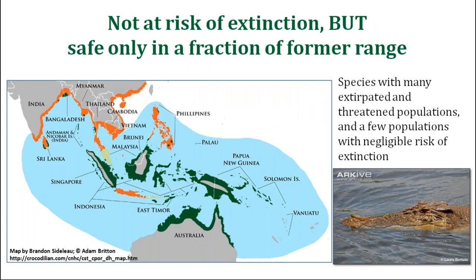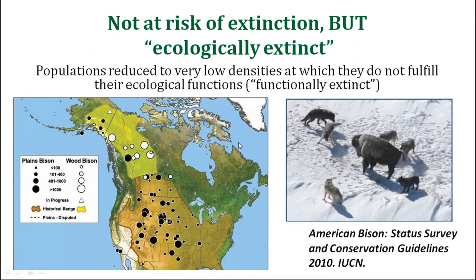When improvement results in a lower RedList category, it sometimes becomes controversial. Instead of celebrating success, conservationists worry that improvement will lead to lower conservation efforts. The problem is not the RedList itself, but the fact that RedList measures extinction risk, which does not capture the degree to which species depend on conservation. There are also species that are not at risk of extinction but are safe only in a fraction of their former range — for instance, the saltwater crocodile, which has some populations in Australia that are relatively safe, but other populations are threatened or have been extirpated.